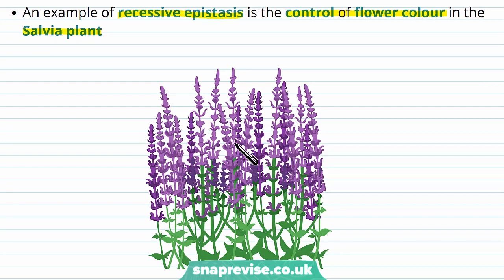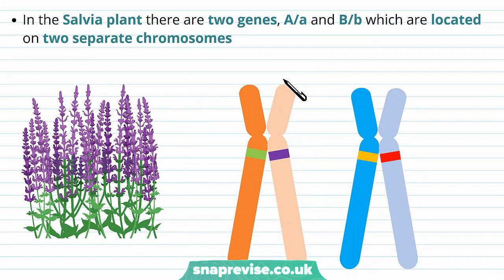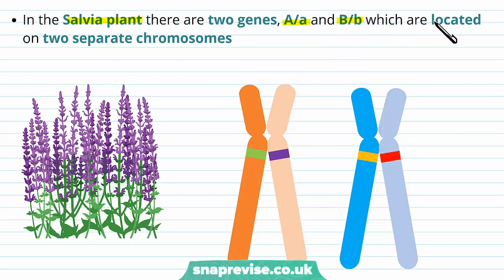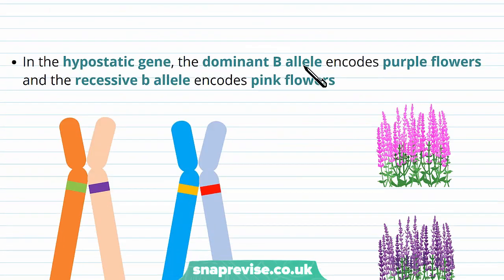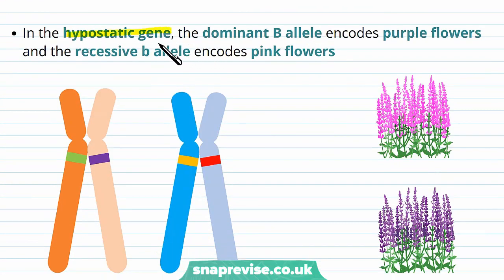Here's the salvia plant with its tall purple flowers. In the salvia plant the two genes are A and B — A can be dominant or recessive, and the same for B — and they're located on two separate chromosomes. The hypostatic gene is B: the dominant B allele encodes for purple flowers, and the recessive B allele encodes for pink flowers.